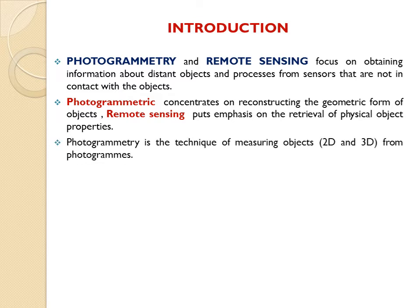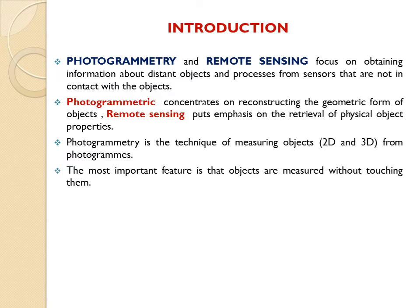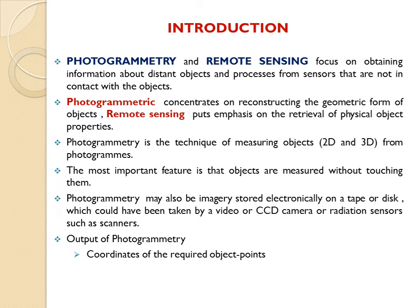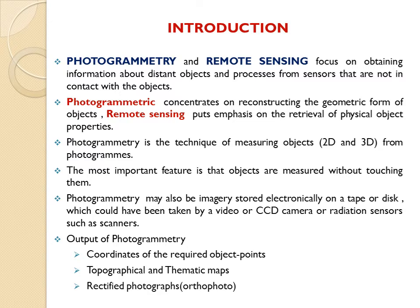Photogrammetry is a technique of measuring 2D and 3D objects from photograms. The most important feature is that objects are measured without touching them. Photogrammetry images may be stored electronically on tape, disc, or memory, taken by video, CCD camera, or radiation sensors such as scanners. The output is always a photogrammetry image consisting of coordinates of required object points, topographical and thematic maps, rectified photographs, or orthophotos.